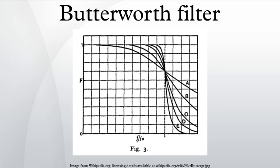When viewed on a logarithmic Bode plot the response slopes off linearly towards negative infinity. A first order filter's response rolls off at 6 dB per octave. A second order filter decreases at 12 dB per octave, a third order at 18 dB and so on.